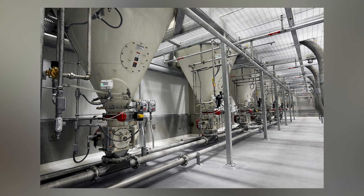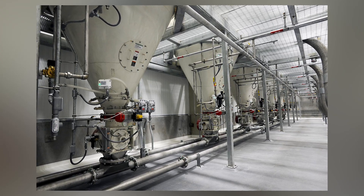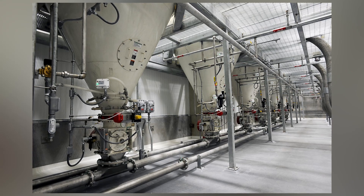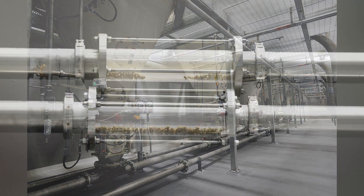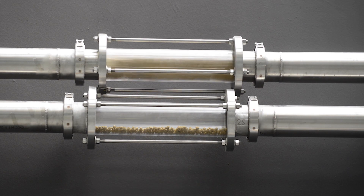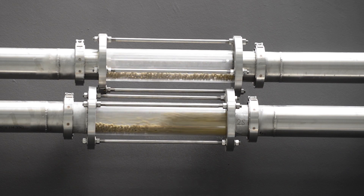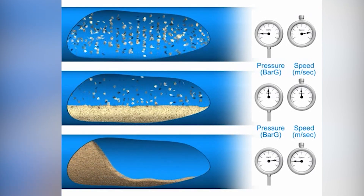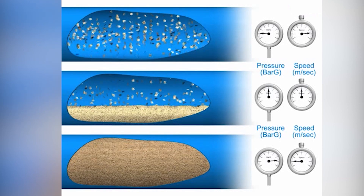For those of you less familiar with pneumatic conveying, I will give a brief overview of the technology, then we will discuss our continuous dense phase technology called Affinity. Pneumatic conveying is the transport of dry materials through pipelines using air or some other gas as the motive force for transportation. There are two primary modes of transport: dilute phase and dense phase flow.